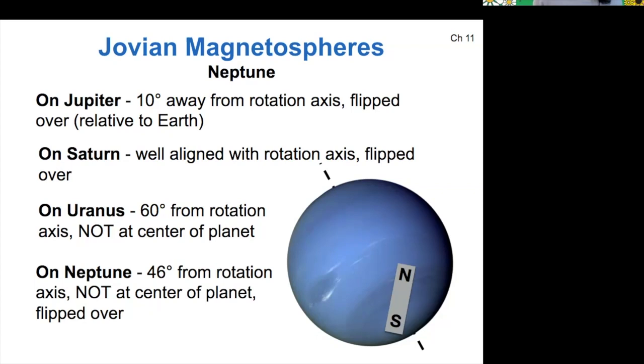But for Uranus and Neptune, we are not sure what generates their magnetic field. Like I said before, they are some of the least explored planets in our solar system, and there's a lot to discover still.